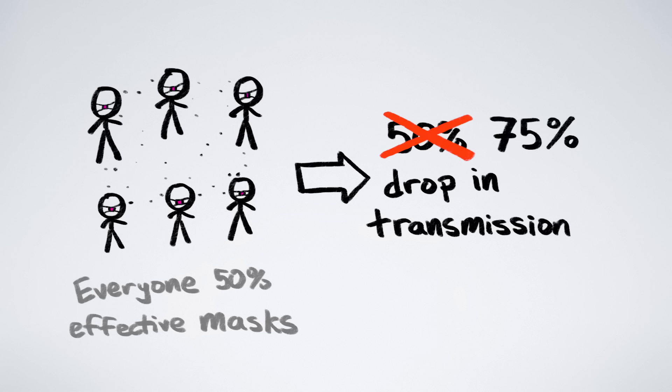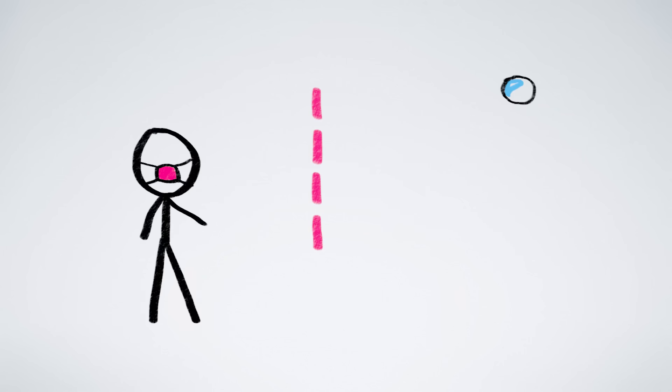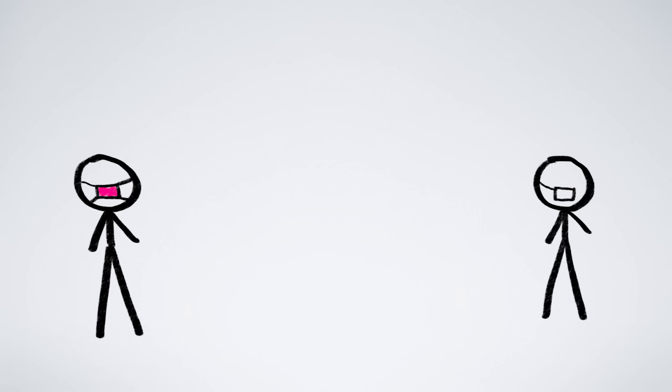Masks break our intuition because we're used to thinking about masks as single-directional, only protecting the wearer. But masks can protect in both directions, when you breathe in through them and when you breathe out. This means that when everyone is wearing masks, there are in fact two masks between any two people.